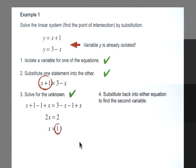Now we're going to substitute back into either equation for x equals 1 and find the second variable. So we're going to sub in to the second equation for x equals 1. And when we do that, we get y is equal to 3 minus 1. And so that means that y is equal to 2.